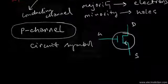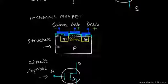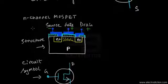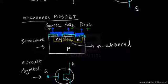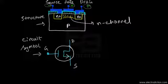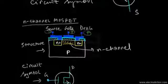There is also the n-channel MOSFET counterpart. Here we have the structure of an n-channel MOSFET, with an n-channel conducting channel constituted by electrons. The voltages applied to the source, drain, and gate terminals are as shown in the diagram. In the circuit symbol for the n-channel MOSFET, the arrow mark is directed away from the gate at the source terminal.